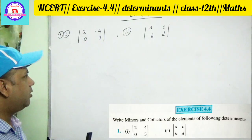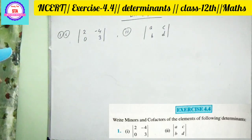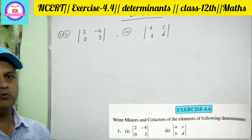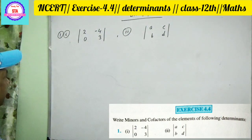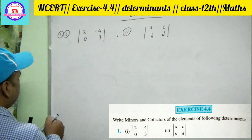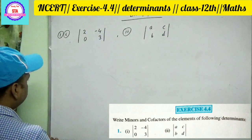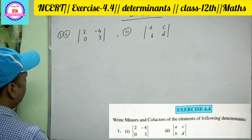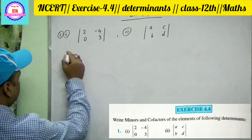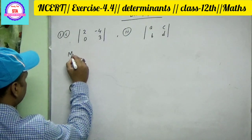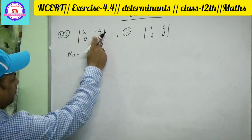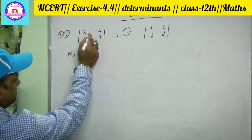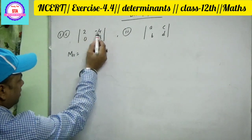Two questions are written. Question number one has two parts. You must remember how minor and cofactor are defined. First, we find the minor — what does this mean? M11. For M11, we eliminate that row and column.